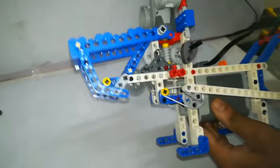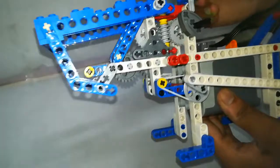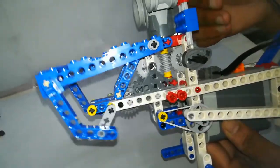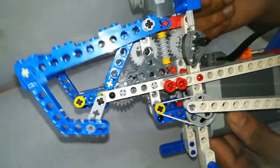You can see the worm gear is rotating and it is transmitting the power to both the crown gears which are meshing on the sides.